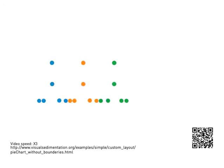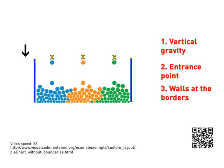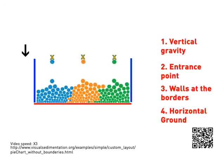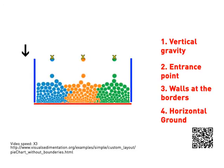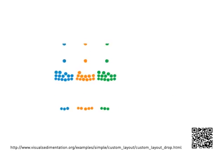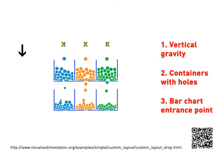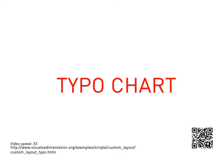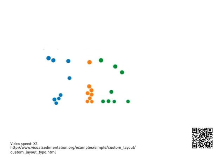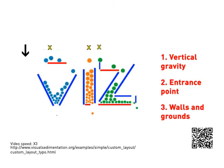The bar chart without boundaries has vertical gravity and several entrance points at the top, with walls at the borders and a horizontal ground. The drop chart uses vertical gravity and containers with holes, with the same entrance points as the bar chart. The typo chart uses vertical gravity and standard entrance points, with a complex layout created by walls and grounds.